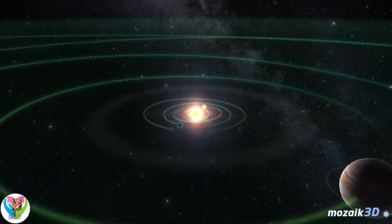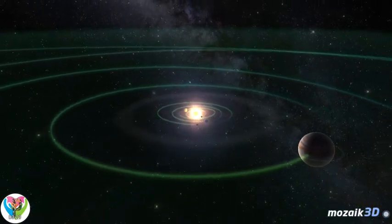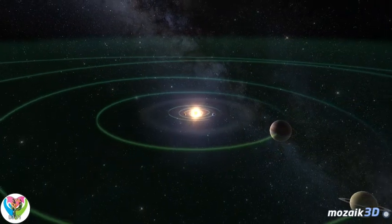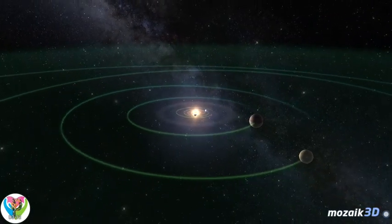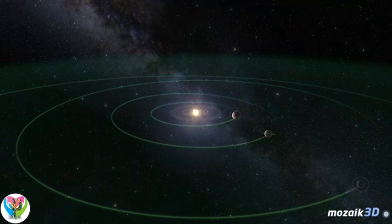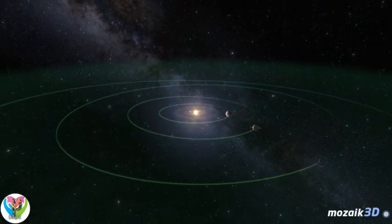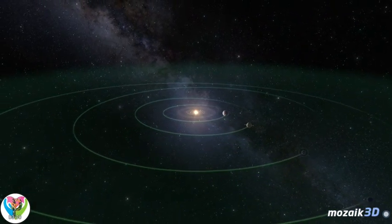The environment of the solar system is sparse. The nearest stars, Proxima Centauri and the double system of Alpha Centauri, are 4.2 to 4.4 light years away from us, and there are only 11 stars within 10 light years.